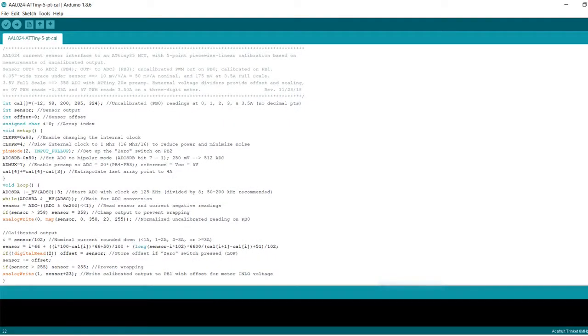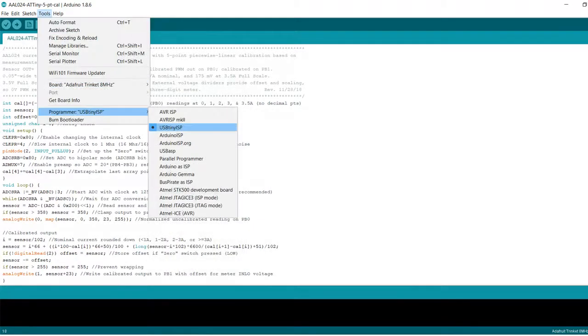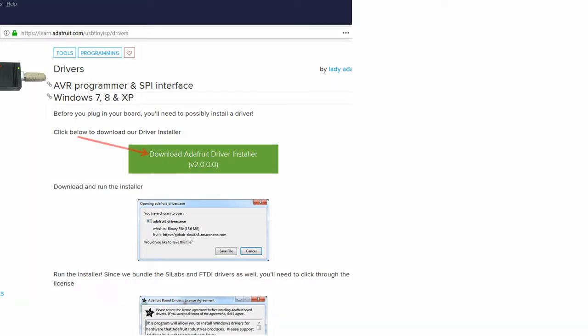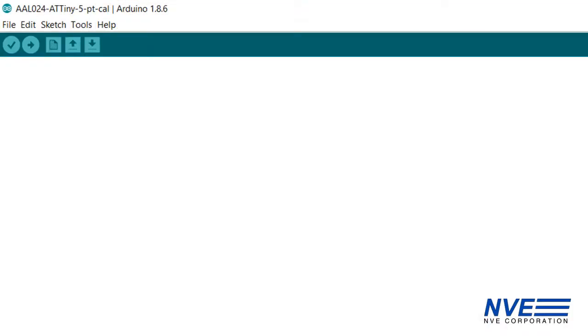The micro includes a trinket bootloader, so we can use the convenient Arduino IDE for programming. We use the trinket board definition and the USB-tiny programmer software. And here's the URL for the board definitions we use. There's a bug in the current Arduino IDE, so we use version 1.8.6.